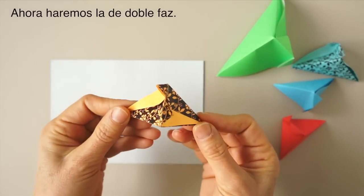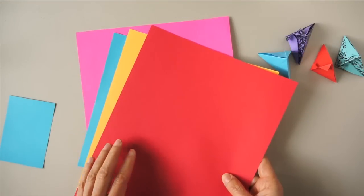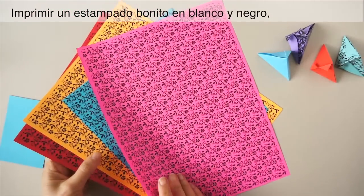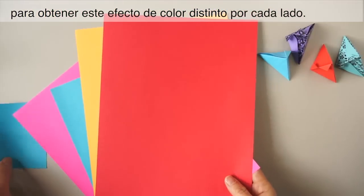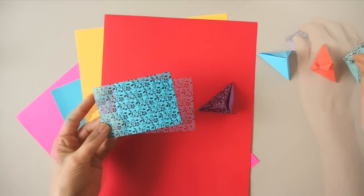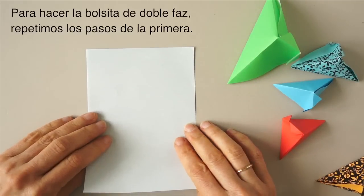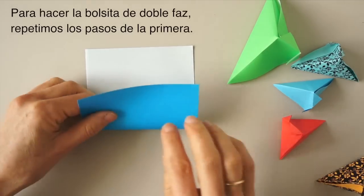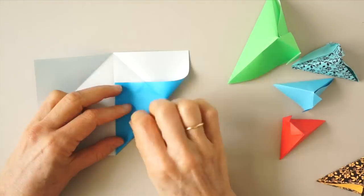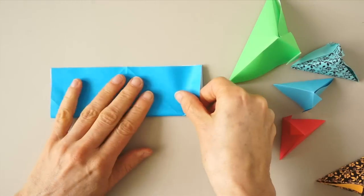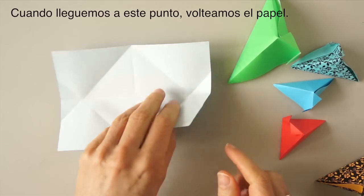Now we make the duocolor one. We can use regular office paper of different colors, print a nice black and white pattern on it to create a duocolor effect. Like this. To make the duocolor pouch, we repeat the process as with the monocolor paper. And when we arrive to this point, we turn the paper over.